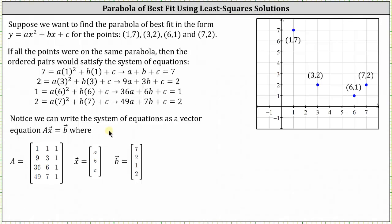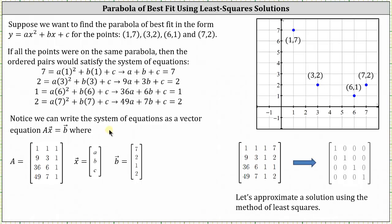Let's set up the augmented matrix, where the first row is 1, 1, 1, 7; the second row is 9, 3, 1, 2; the third row is 36, 6, 1, 1; and the fourth row is 49, 7, 1, 2. Writing the augmented matrix in reduced row echelon form, notice how we have a contradiction in row four — row four indicates 0 equals 1, which of course is not true.